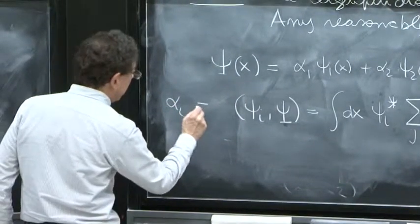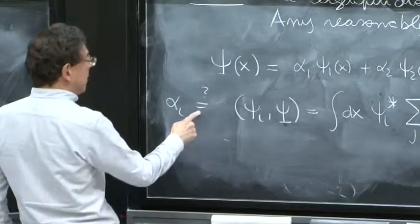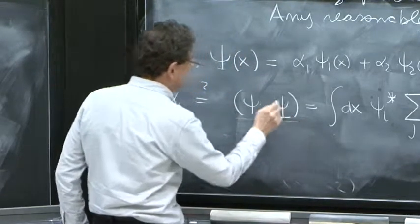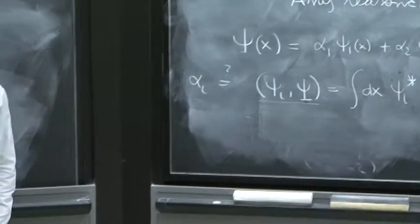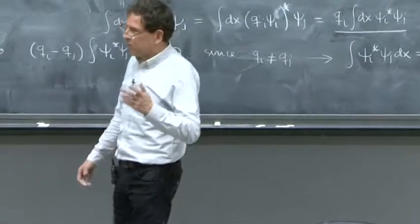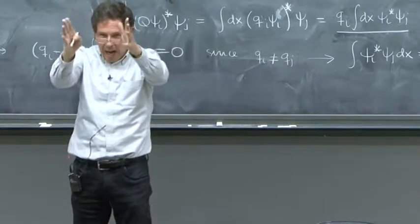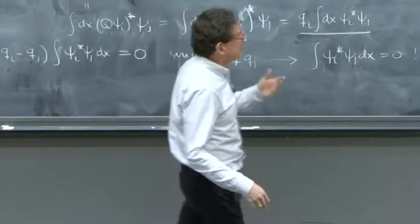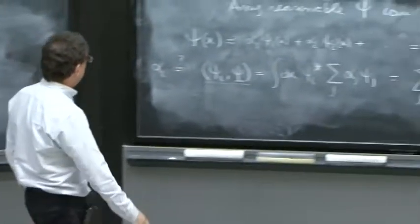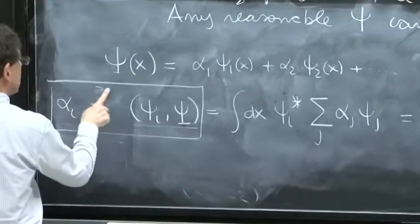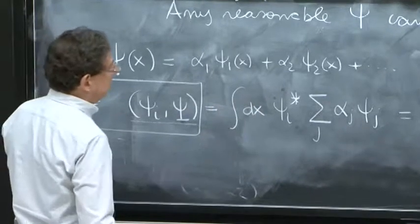So we did succeed in calculating this. And in fact, alpha i is equal to this integral of psi i with psi. So how do you compute an alpha i? You must do an integral of what? Of psi i star times your wave function. So it is calculable. So the alpha i's are given by these numbers, as we proved there.